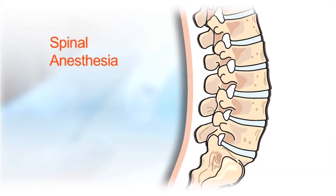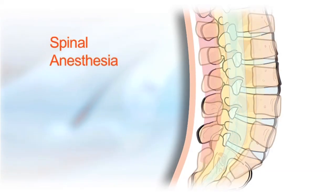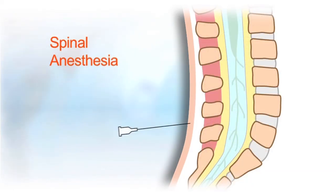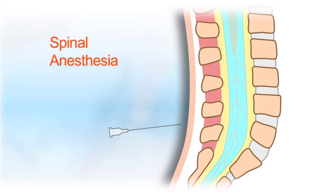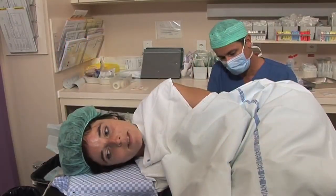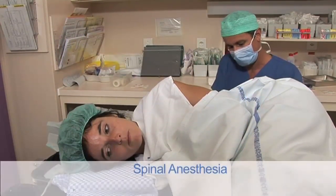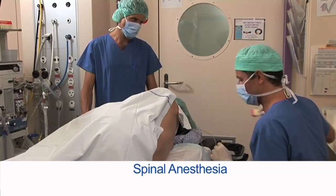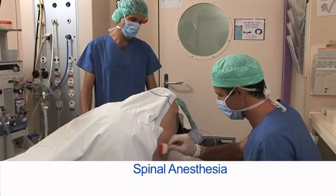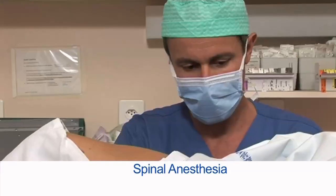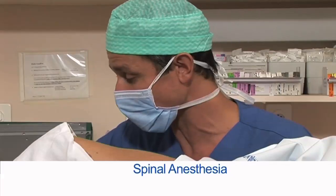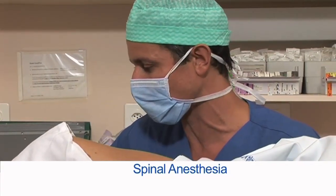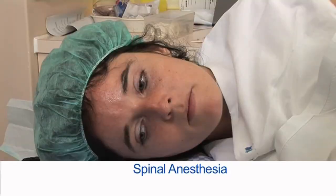Spinal anaesthesia consists of the injection of a local anaesthetic into the fluid which bathes the spinal cord. Nothing is left in your back once the needle is withdrawn. This type of anaesthesia is particularly useful in orthopaedic and urologic surgery. I'm going to clean your skin with a rather cold disinfectant — it's a bit cold. If something isn't right, if you don't feel well or if you feel pain, please tell me, but try not to move so I won't lose the spot.